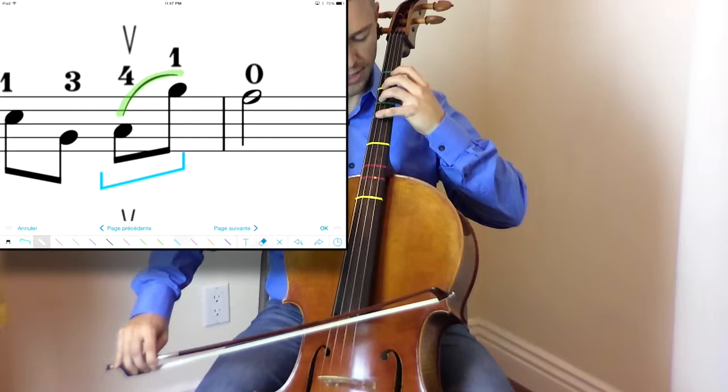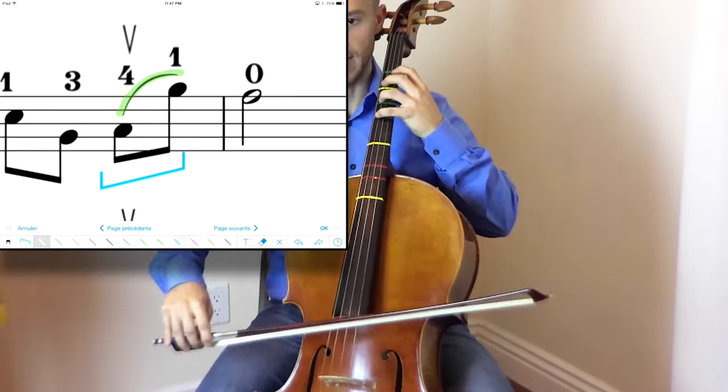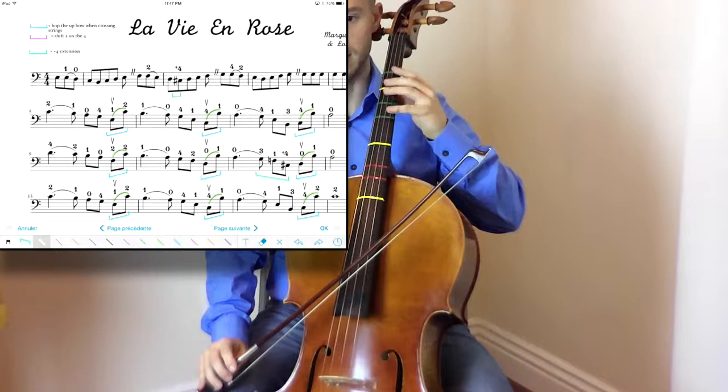Let's go into measure seven. We have the same four, one. Hop. To give you that nice smoothness. Otherwise, you're going to hear the extra note in there, the extra sound in there. That's definitely not something you want to hear.